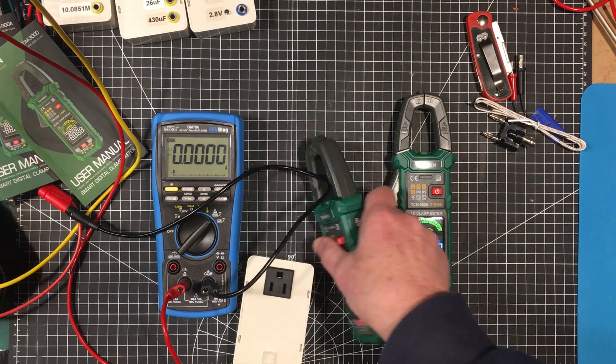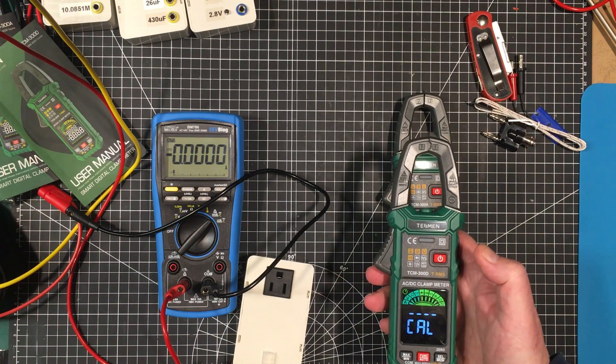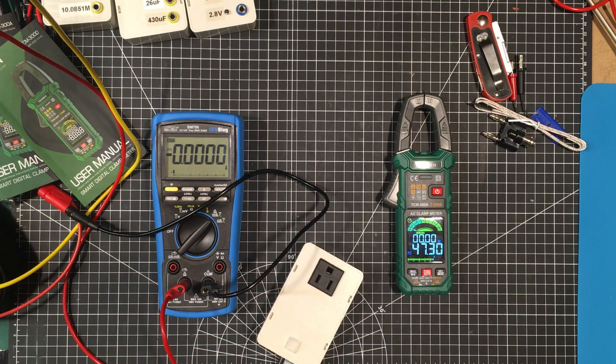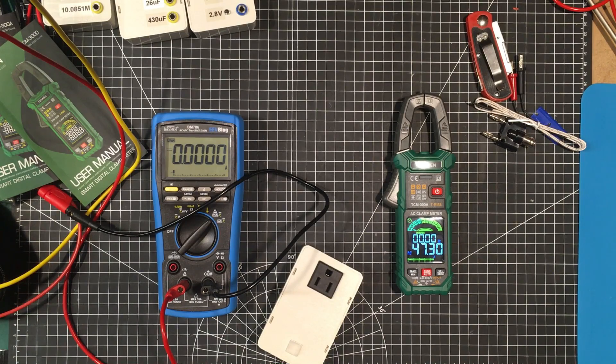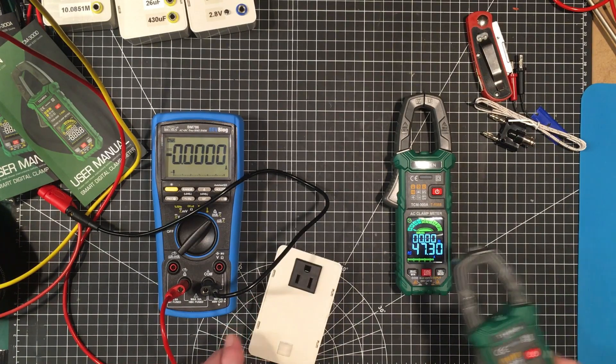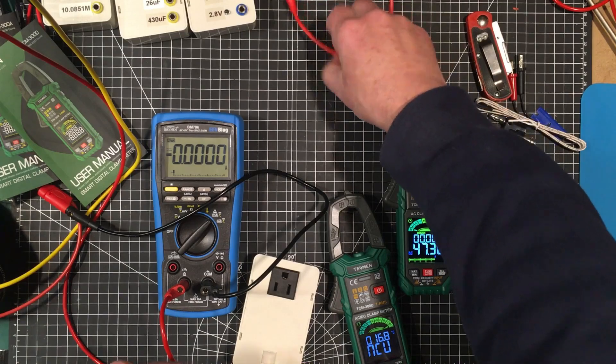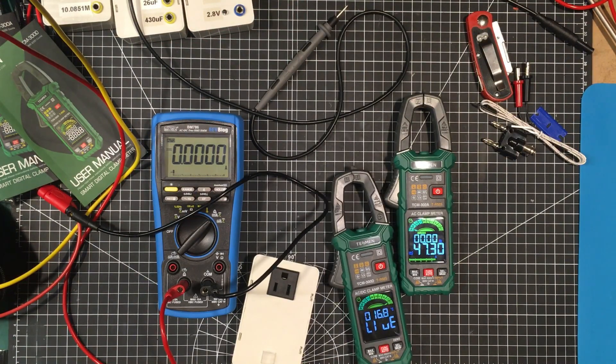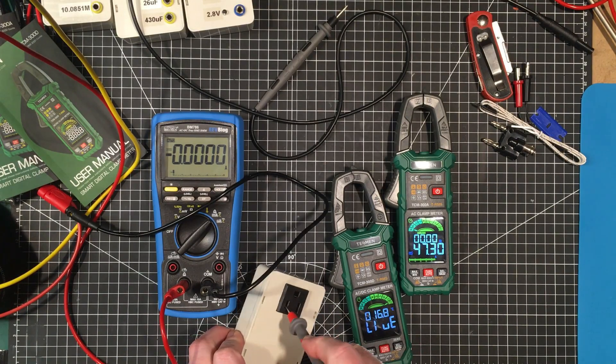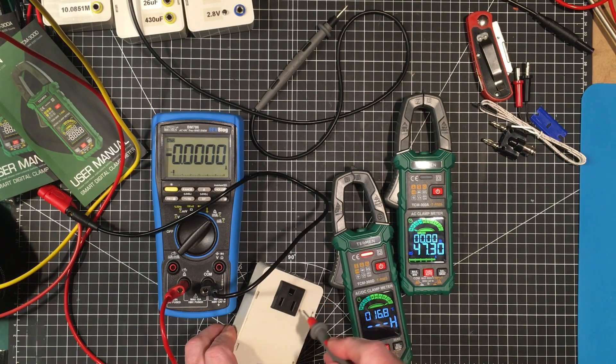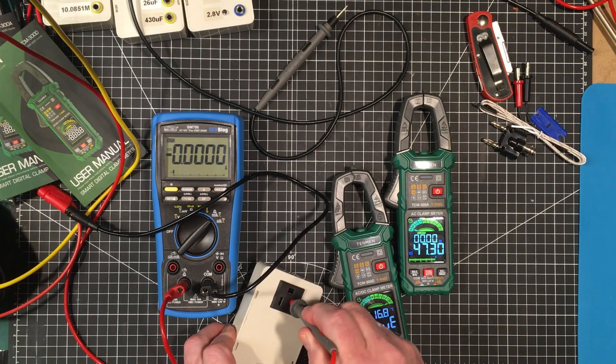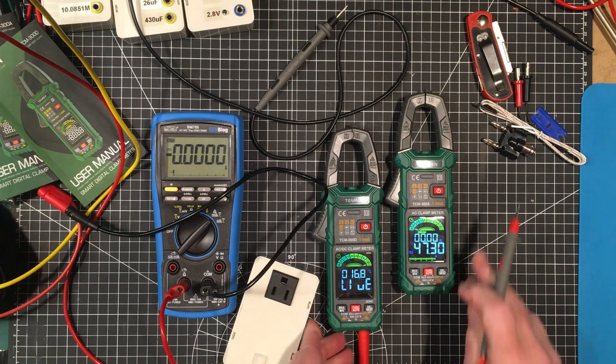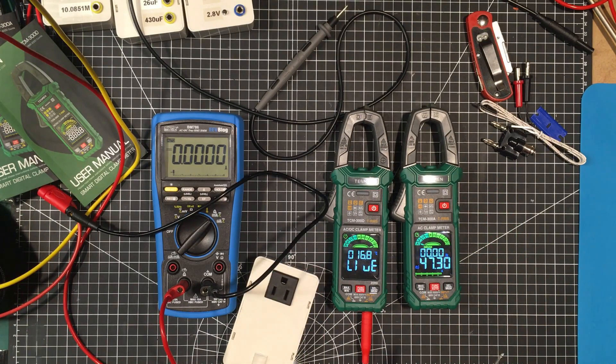Let's try the NCV mode. Turn this one back on. NCV. Probably work better here. Oh yeah. Okay. Yeah, it works fine. And we'll try the live mode too. And put it into this terminal here. And we should be able to then tell the distance between live and the neutral. So live and neutral. So it's working fine. Yeah, that's perfect. That's a very nice feature. It's showing up more and more on meters these days. And I like it a lot.